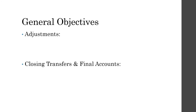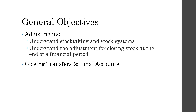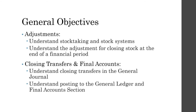We will now look at the general objectives of our next two topics: adjustments and closing transfers and final accounts. For adjustments, you need to be able to understand stock taking and stock systems, and understand the adjustment for closing stock at the end of a financial period. For closing transfers and final accounts, understand closing transfers in the general journal, understand posting to the general ledger and final account section, and draw up the post-closing trial balance.